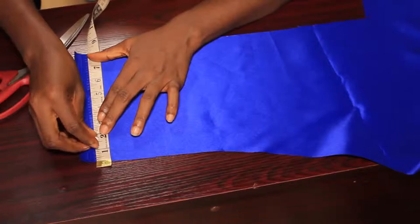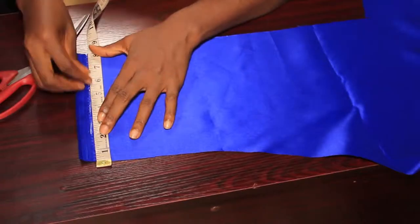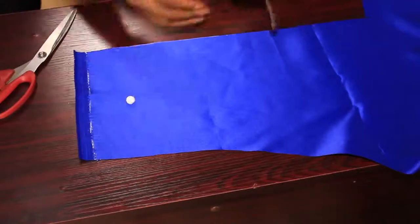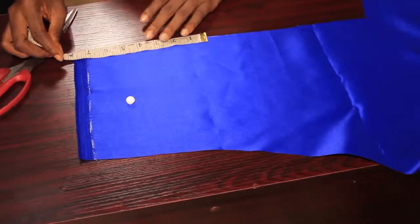There's no hard or fast rule on the measurement to use while making a bow. It depends on how big or small you want your bow to be. I'm going to cut this part of the fabric off.